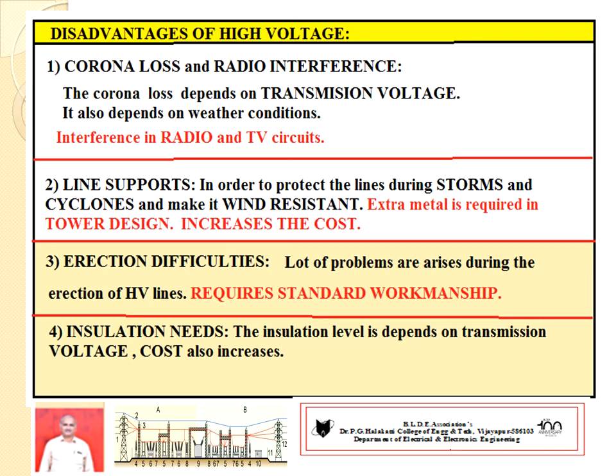Disadvantage number two concerns line supports. In order to protect the lines during storms, cyclones, winds, and abnormal weather conditions, extra metal design is required in the tower structure, which increases the cost of the system. If high voltage is used, the tower structure must change accordingly, making it more costly.